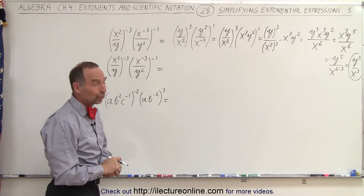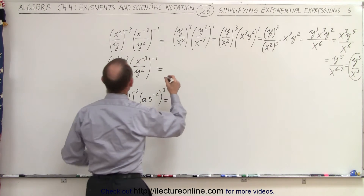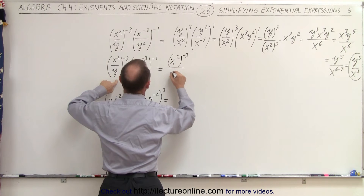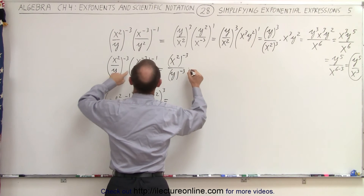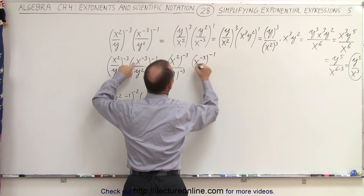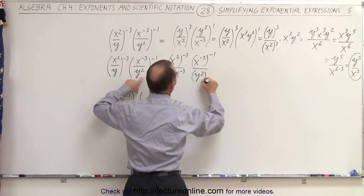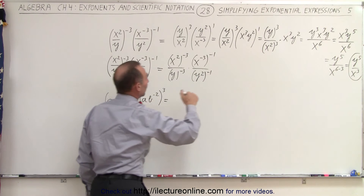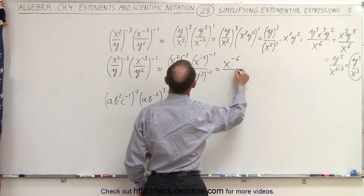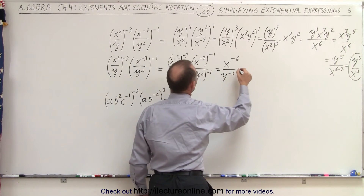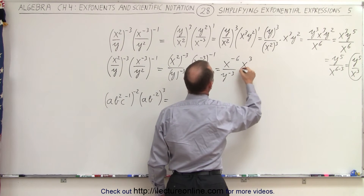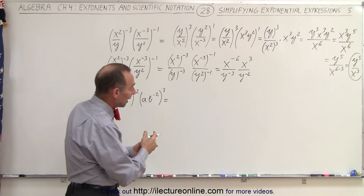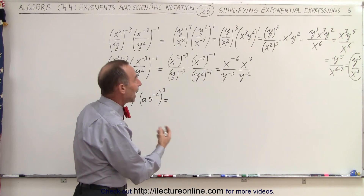Could we get there a little bit faster? We could by simply multiplying everything together. So here we can say that we have x squared raised to the negative 3 power divided by y raised to the negative 3 power, times x to the negative 3 raised to the negative 1 power, and y squared raised to the negative 1 power. We simply apply the rule: when we have an exponent raised to an exponent, we multiply exponents. So this becomes x to the minus 6 divided by y to the minus 3, and here we have x to the positive 3 divided by y to the negative 2. Then we use the rule that when we multiply and the bases are the same, we simply add exponents.